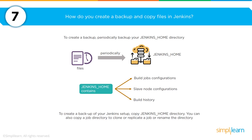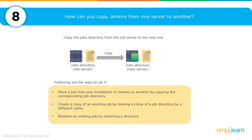How do you create a copy and backup of Jenkins? To create a backup, periodically back up Jenkins to your Jenkins home directory, then create a copy of that directory. To copy Jenkins from one server to another, there are three ways: move a job by copying the corresponding job directory; create a clone of an existing job directory with a different name; or rename an existing job by renaming the directory.